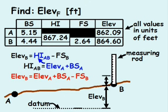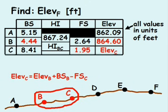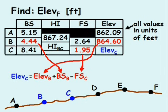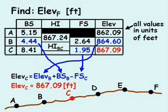We can use this equation to find the elevation at point C by knowing the elevation at point B and the back sight to point B and the foresight to point C. The elevation at point C equals 867.09 feet.